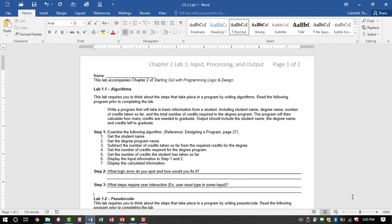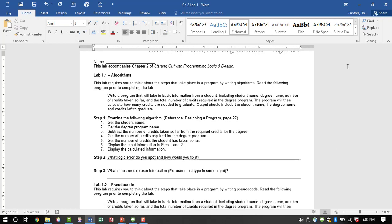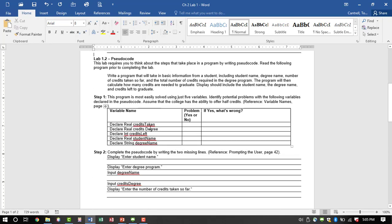What logic error do you spot and how would you fix it? So you look at those steps, and it tells you there is a logic error. You've got to determine what that is and then fix it. Step three, what steps require user interaction? I just kind of told you that, what keyword to look for. Then Lab 2, it tells you the five variable names.